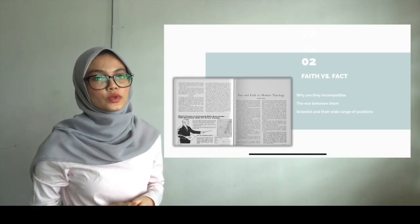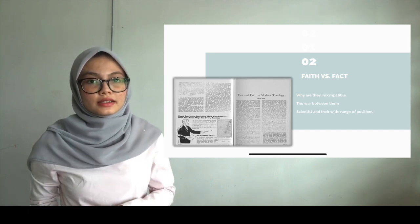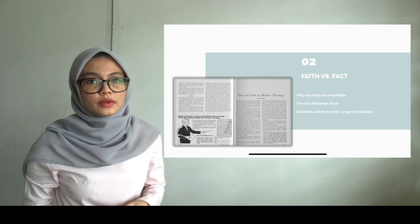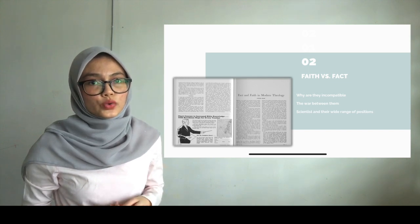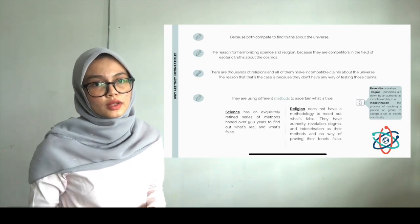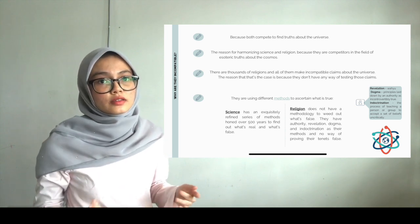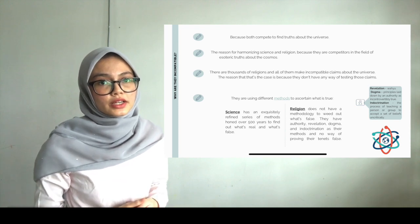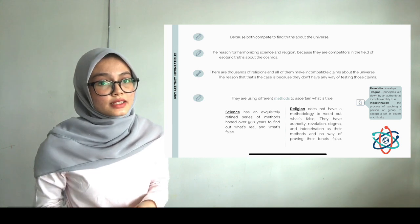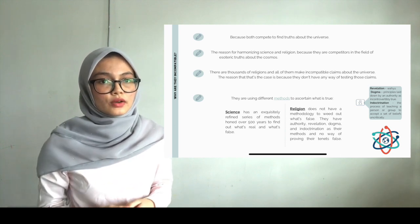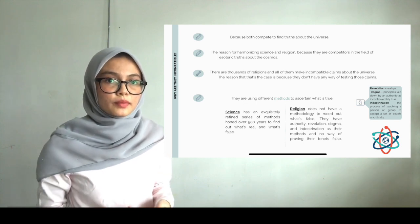We'll move on to the next topic, which is faith and facts. In this subtopic, we will go through more about the differences of science and religion and why they are incompatible. They are incompatible because they both compete to find truth about the universe. There are some fundamental truths about the universe that believers have to accept in order to be religious. The reason why people are so concerned with harmonizing science and religion is because they are competitors in the field of esoteric truth about the cosmos.